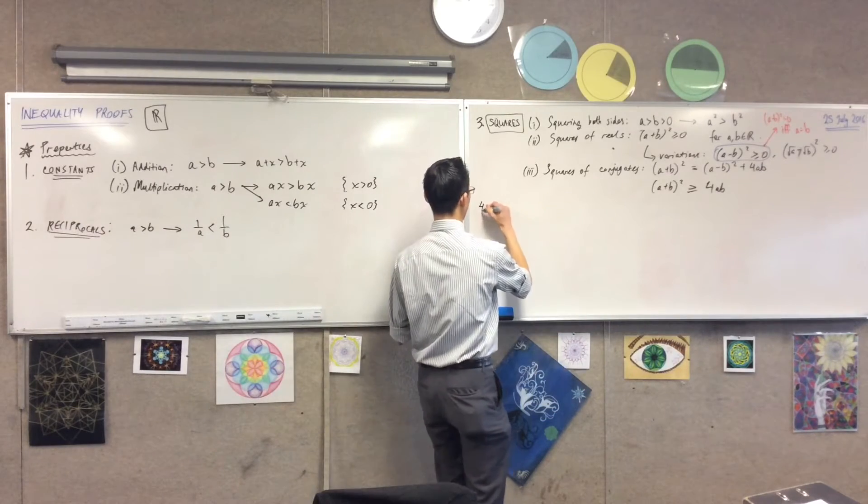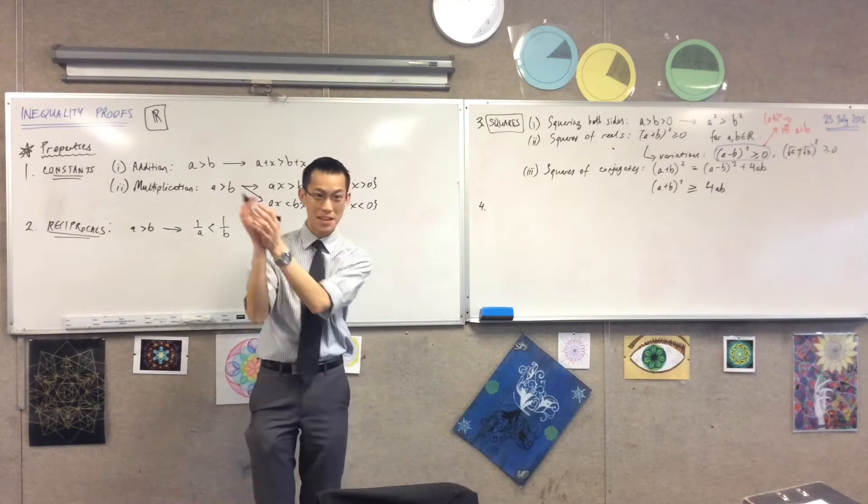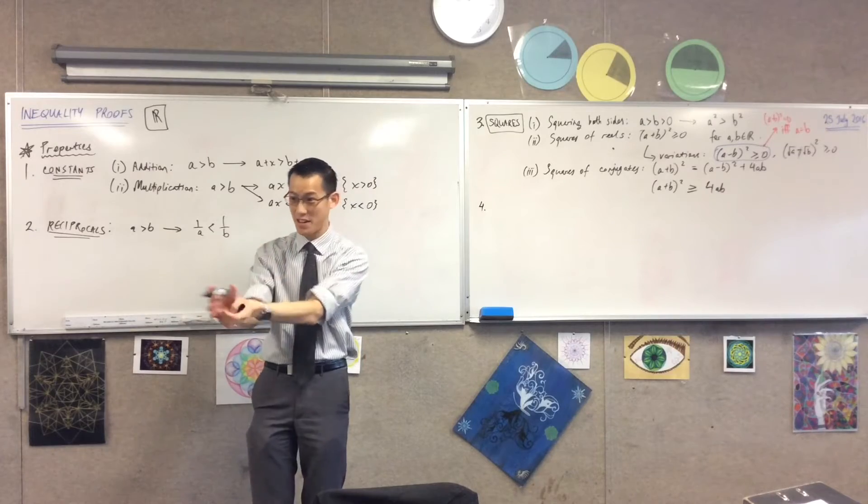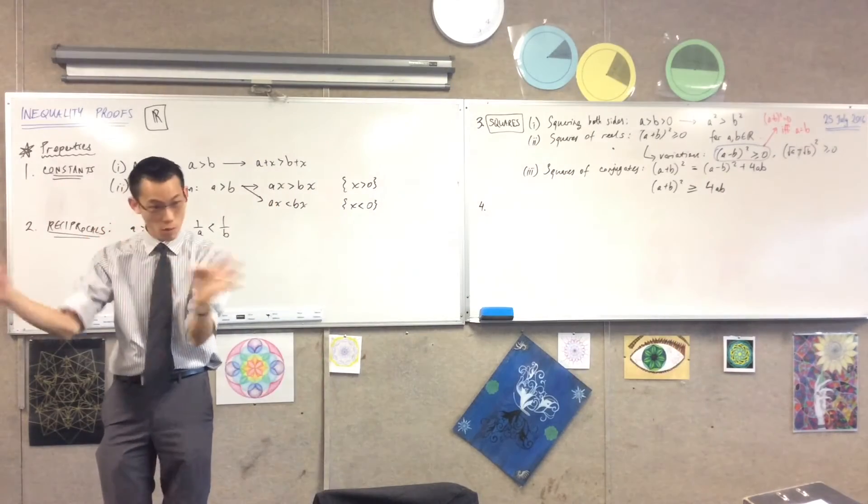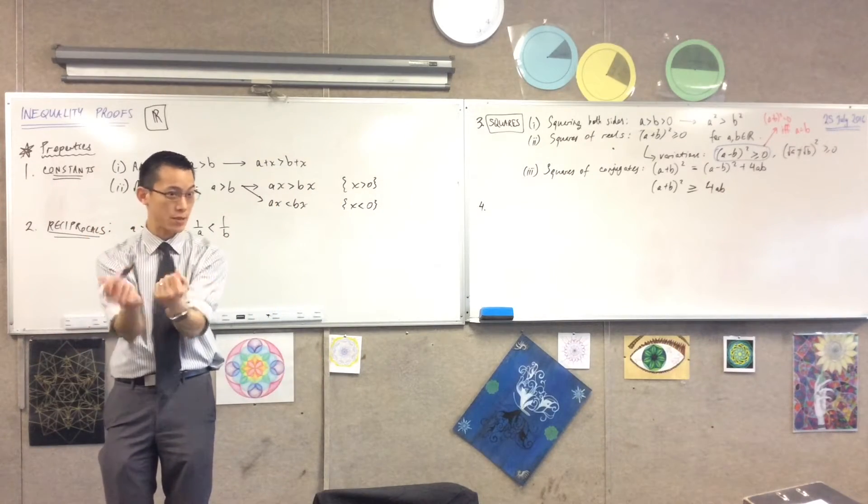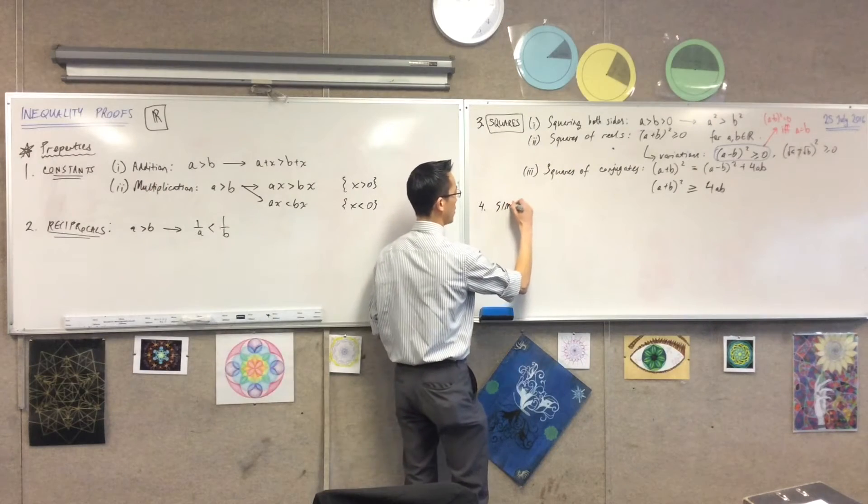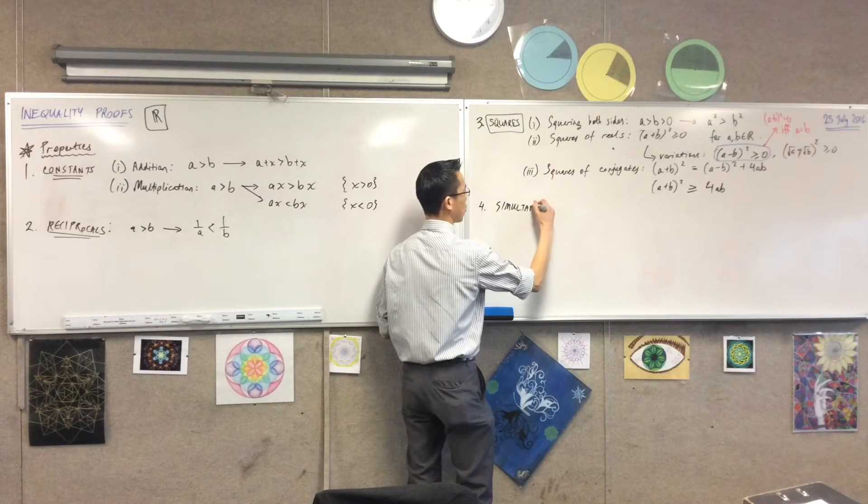My last one is the trickiest one. You've heard of simultaneous equations, right? Simultaneous equations, it's where you've got two or more equations and you know they're meant to operate together in the same universe. Well, in just the same way, you can have simultaneous inequalities.